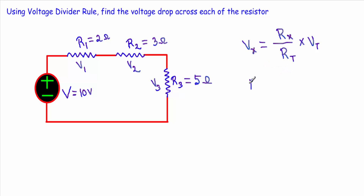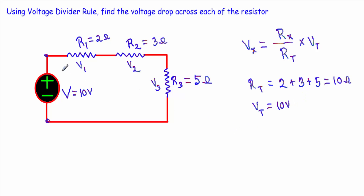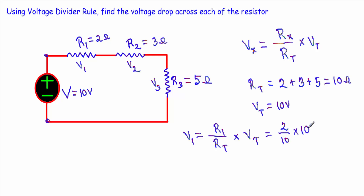Here we have RT — the series resistance with respect to these two terminals. R1, R2, and R3 are all in series, so RT equals 2 plus 3 plus 5, which equals 10 ohm. Total supply voltage Vt equals 10 volts. To calculate V1, we apply the voltage divider rule: V1 equals R1 divided by RT, multiplied by Vt. Here R1 is 2 ohm and RT is 10 ohm and supply voltage is 10 volts. Therefore V1 equals 2 volt.